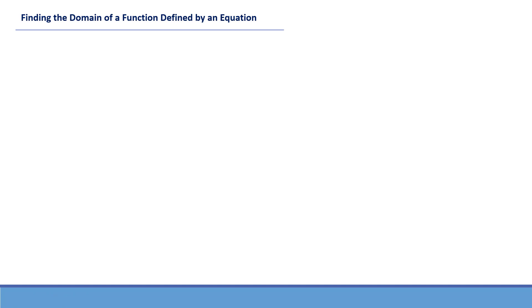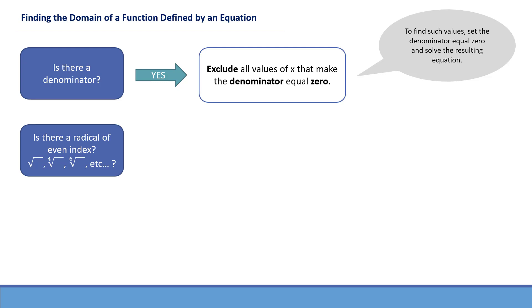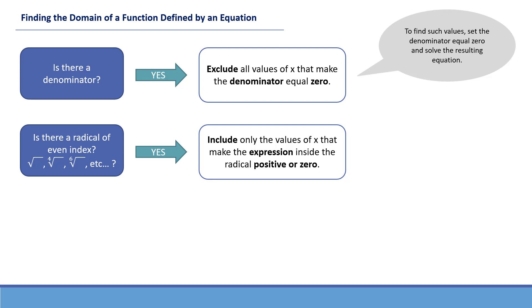Let's summarize. When finding the domain of a function defined by an equation, we look for special cases. First, if a function has a denominator with variables, we must exclude all values of x that make the denominator equal zero. To find such values, we set the denominator equal to zero and solve. Also, if there are radicals of even index — square root, fourth root, sixth root — the radicand must be positive or zero to obtain a real number answer. So the domain includes only values of x that make the expression inside the radical greater than or equal to zero.